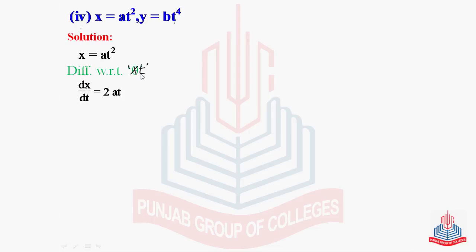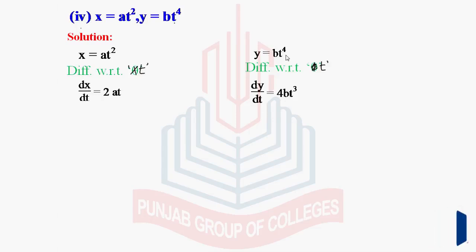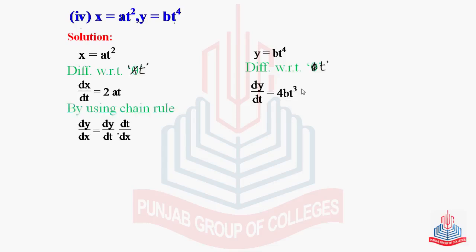So dx/dt is equal to 2at. And y equal to bt⁴ — again differentiate with respect to t. So dy/dt is equal to, by using the power rule, b will remain as is and the derivative of t⁴ will become 4t³. Now by using the chain rule, dy/dx equals dy/dt times dt/dx. Putting in the value: dy/dt is 4bt³ and dt/dx is the reciprocal of dx/dt, which is 1 over 2at.